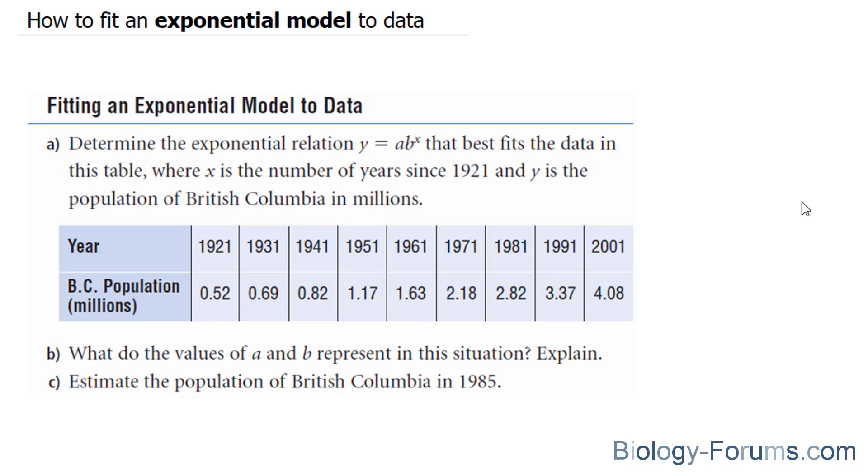The question reads: determine the exponential relationship y equals a times b to the power of x that best fits the data in this table, where x is the number of years since 1921 and y is the population of British Columbia in millions.